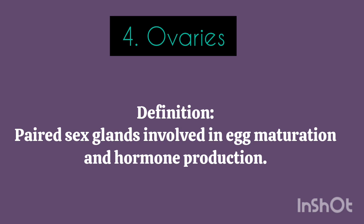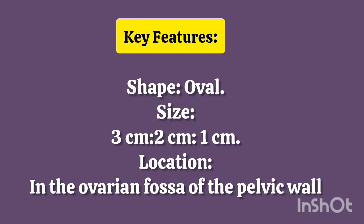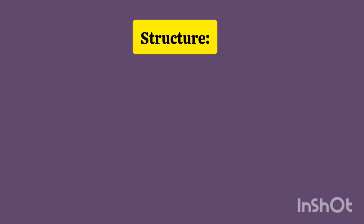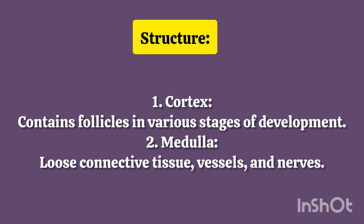Ovaries – Definition – Paired Sex Glands Involved in Egg Maturation and Hormone Production. Key Features: Shape – Oval; Size – 3 cm x 2 cm x 1 cm; Location – In the Ovarian Fossa of the Pelvic Wall. Structure: 1. Cortex – Contains Follicles in Various Stages of Development.